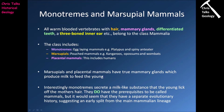Marsupials and placental mammals have true mammary glands which produce milk to feed the young. Interestingly, monotremes have developed a different method — the mother secretes a milk-like substance onto her hair which is then licked off by the offspring. Monotremes do have mammary glands and are considered mammals, however the differences suggest a somewhat separate evolutionary history and a relatively early split of the monotremes from the main mammalian lineage.